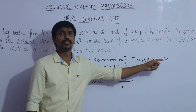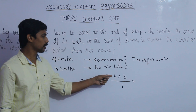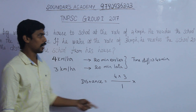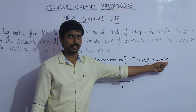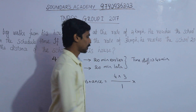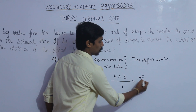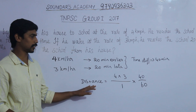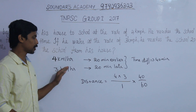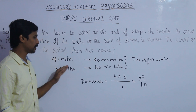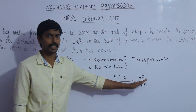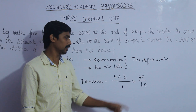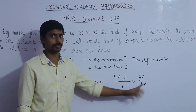The time difference is 40 minutes. The speeds are 4 km per hour and 3 km per hour. Since the time is in minutes, we convert 40 minutes to hours: 40 divided by 60.